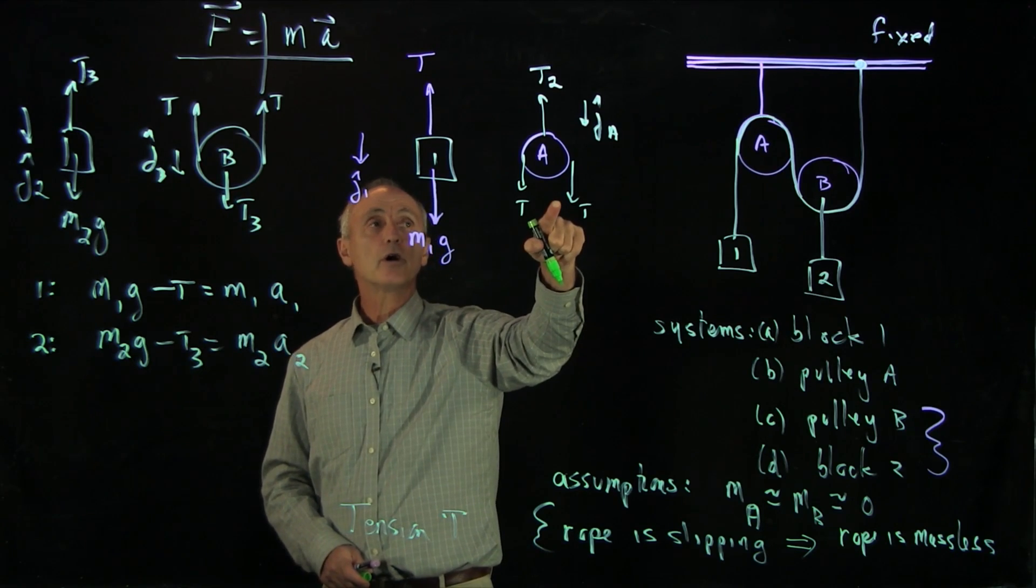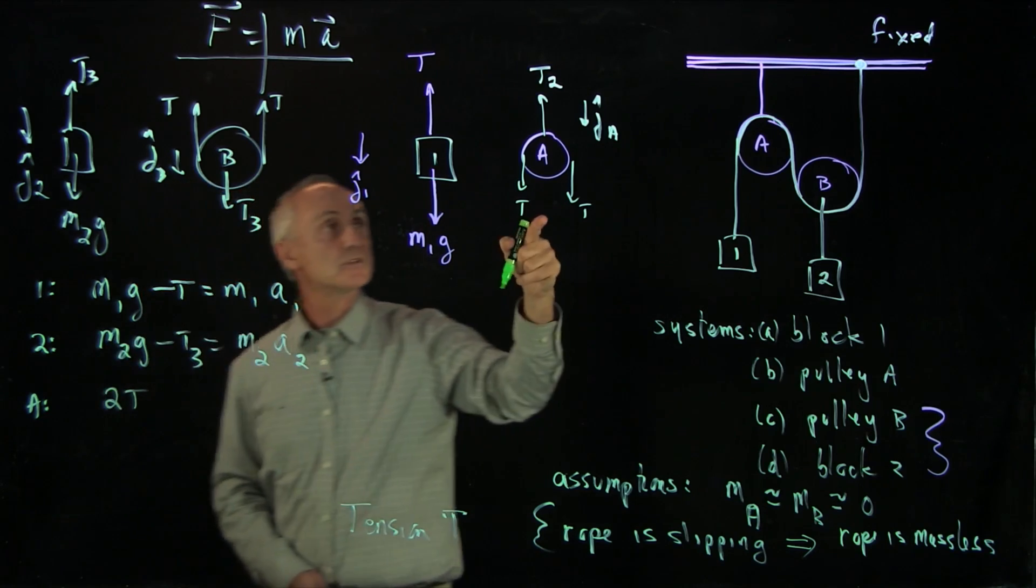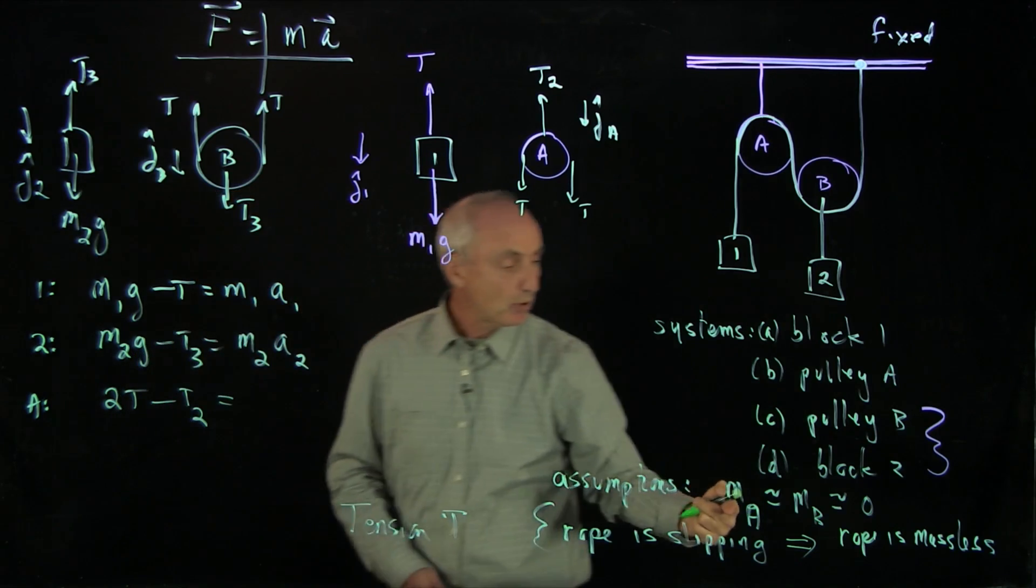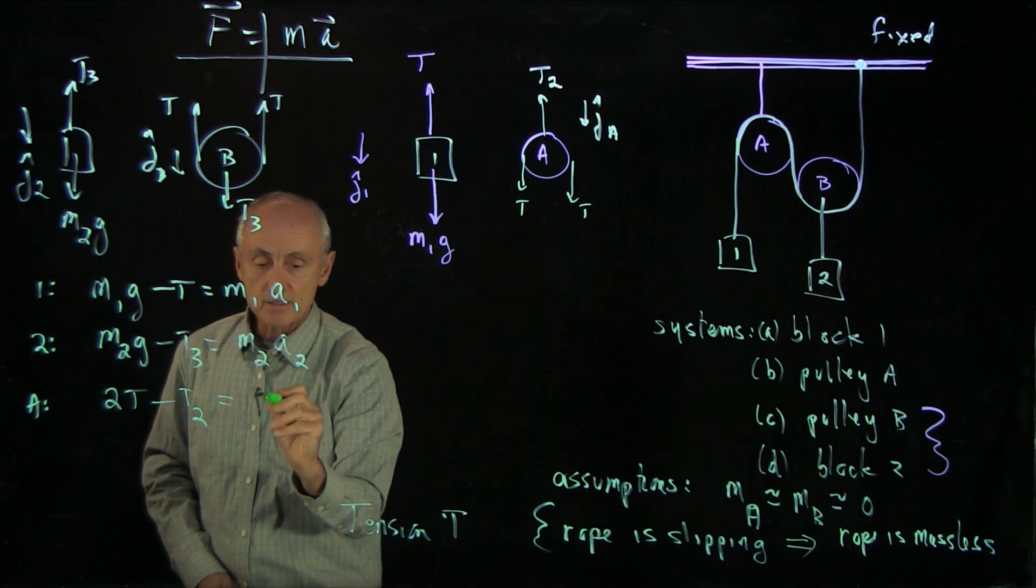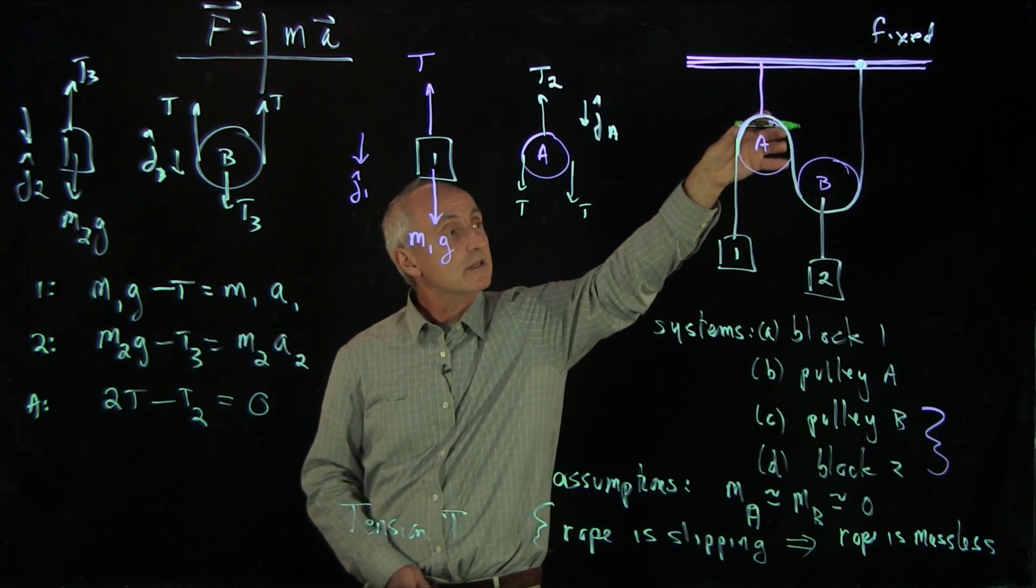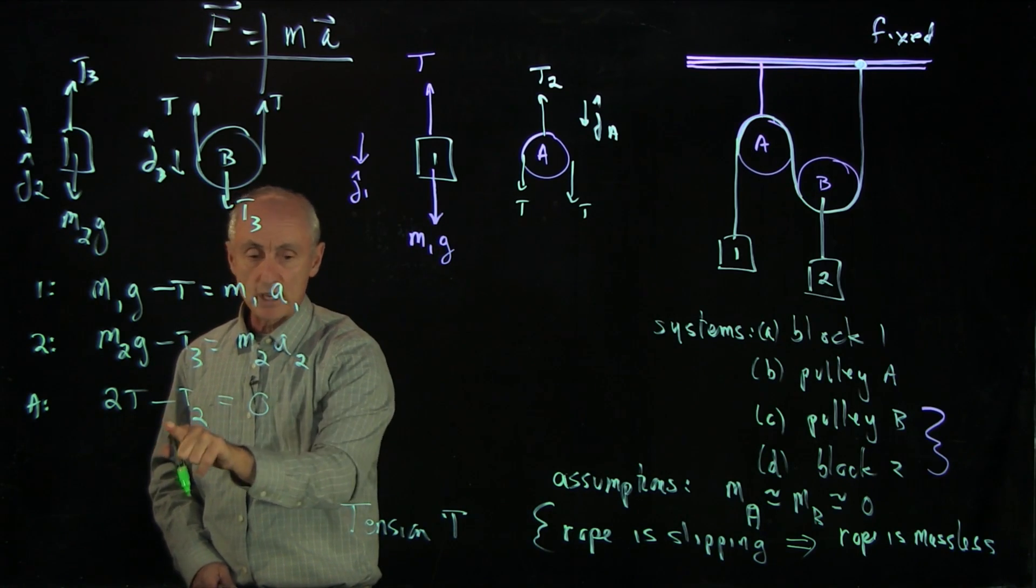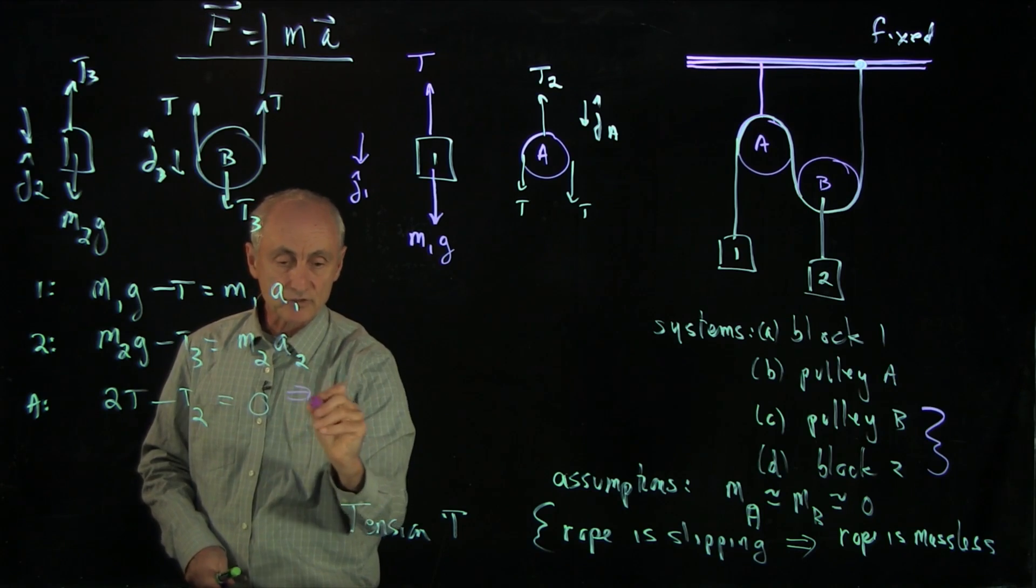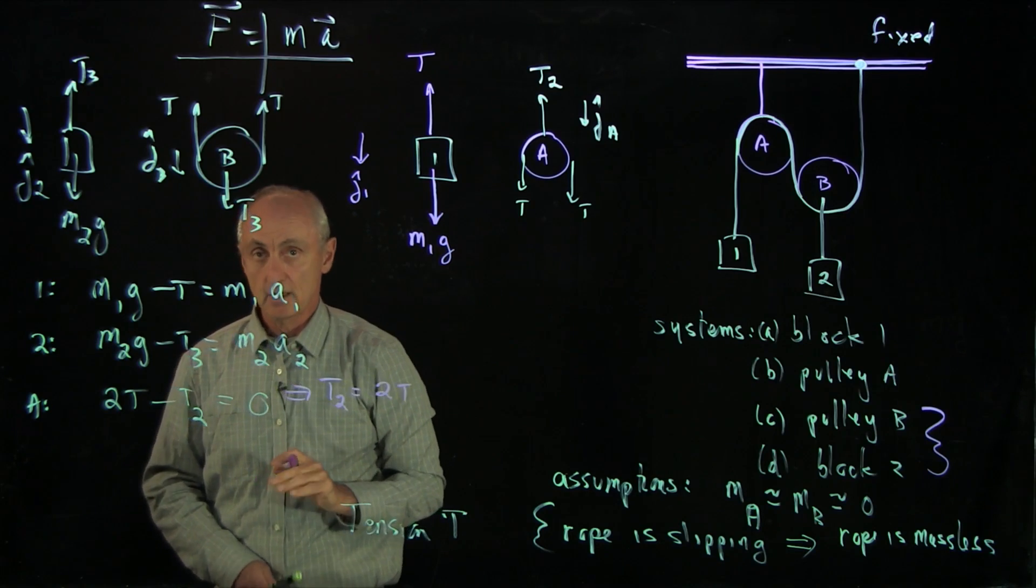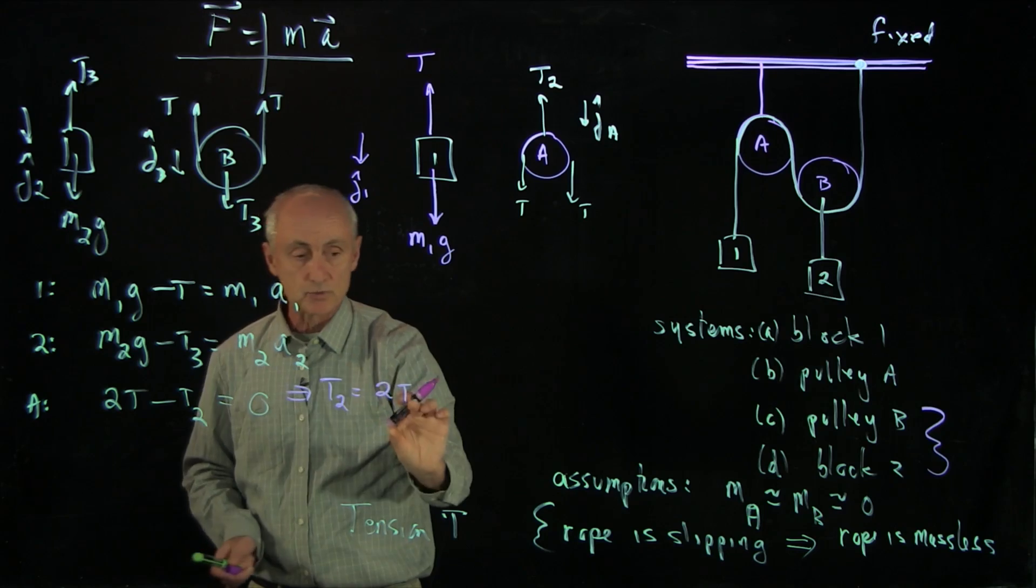Now for pulley A, we have 2T pointing downwards minus T2 going upwards. And because pulley A is massless, this is 0. Even though pulley A may be, it's actually fixed 2, so it's not even accelerating. And what we see here is this equation tells us that the string holding pulley 2 up, T2, is equal to 2T. If we wanted to know what T2 is, we need to calculate T.